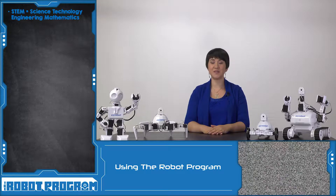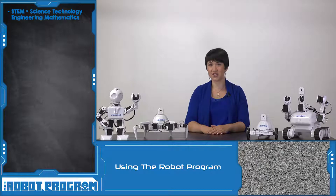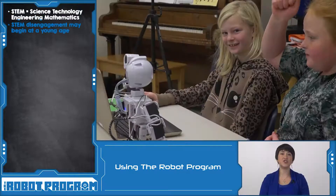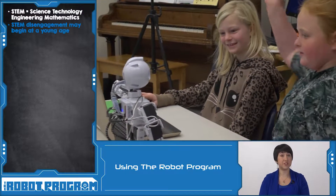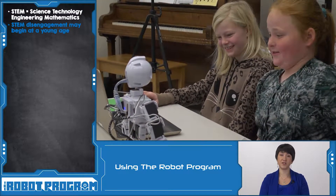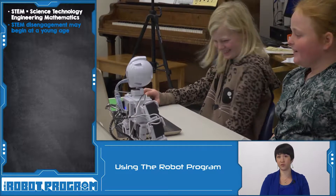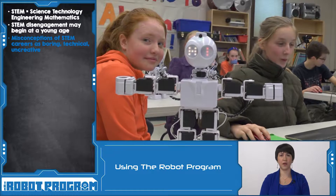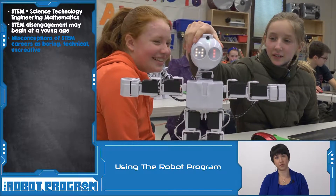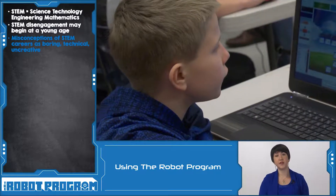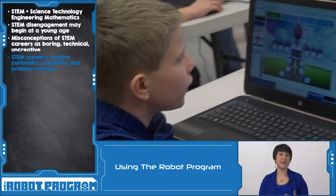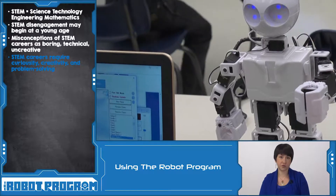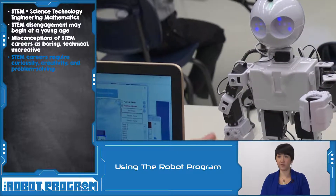The Robot Program was designed by EasyRobot to help advance STEM education — science, technology, engineering and mathematics. The literature tells us that students, especially female students, start to lose interest in the STEM fields as early as grade 4. There's a misconception that STEM is dry and technical and boring, but that couldn't be further from the truth. We know that people who work in STEM need to have curiosity, discovery and experimentation skills, and at EasyRobot we want to encourage those traits through the Robot Program videos.